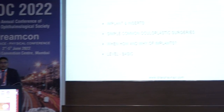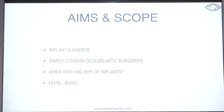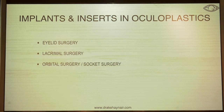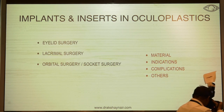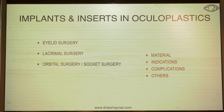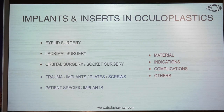The aim and scope of this talk is to give a brief introduction to all the implants and inserts that we put in the eye, the eyelids, the socket, and the lacrimal system — essentially the simple and common oculoplastic surgeries that every general ophthalmologist may have to perform. I'll categorize this talk into three sections: eyelid surgery, lacrimal surgery, and orbital surgery, covering these implants in terms of material, indications, complications, and other important considerations. I will not be covering trauma and patient-specific implants, as these are at a completely different advanced level.